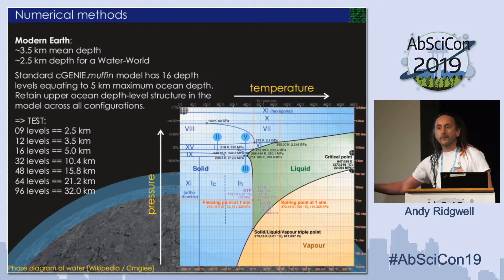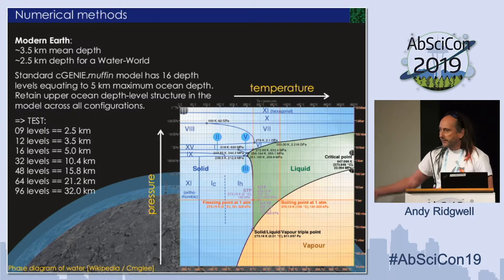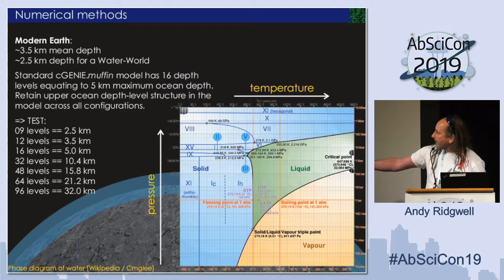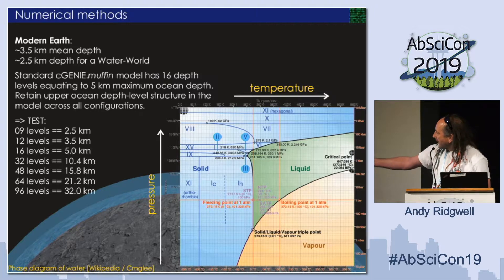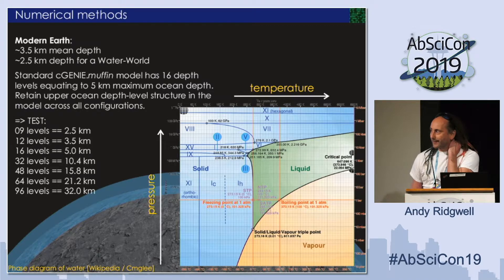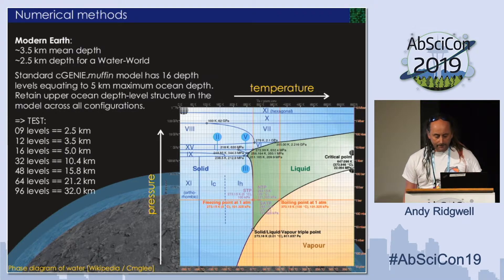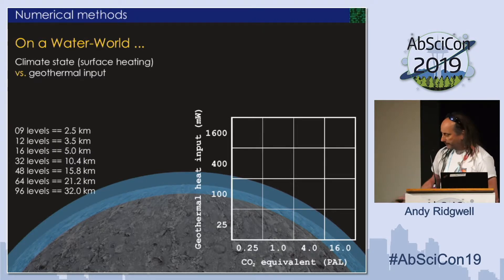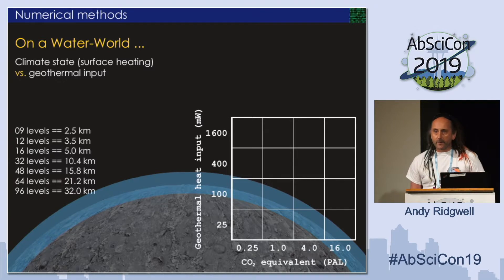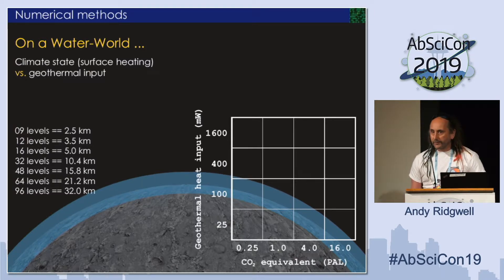The 2.5 km case is just the water on today's ocean spread over a smooth billiard ball. There is a 3.5 km case — the mean depth of today's ocean — and 5 km, which is a typical deep bit of the ocean today. Then I just keep adding levels: 10, 15, 21 kilometers. I've not yet successfully run 32 kilometer deep oceans due to a technical spin-up problem. The phase diagram of water in temperature-pressure space shows you could get to about 100 kilometers before worrying about the water becoming ice. The ensemble covers different configurations — 2.5, 3.5, et cetera — of a pure water world with otherwise modern-like orbits, solar constant, water density, and salinity.